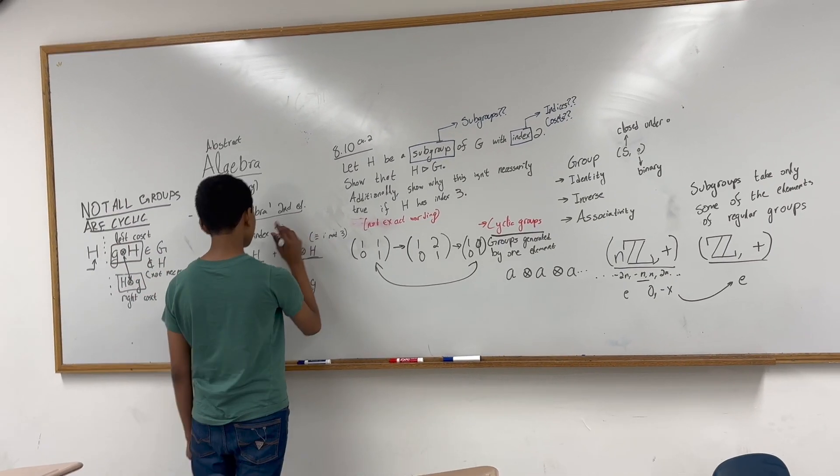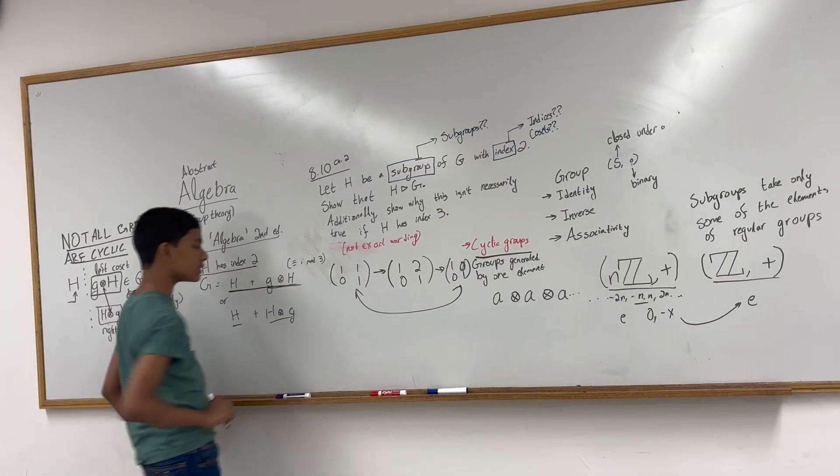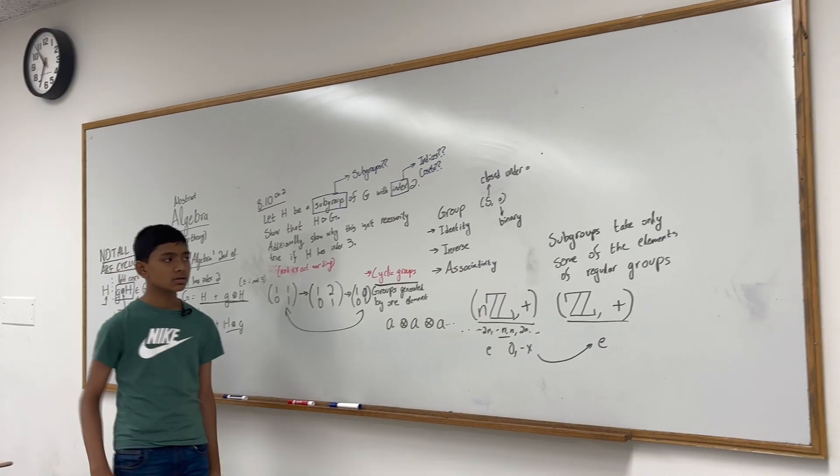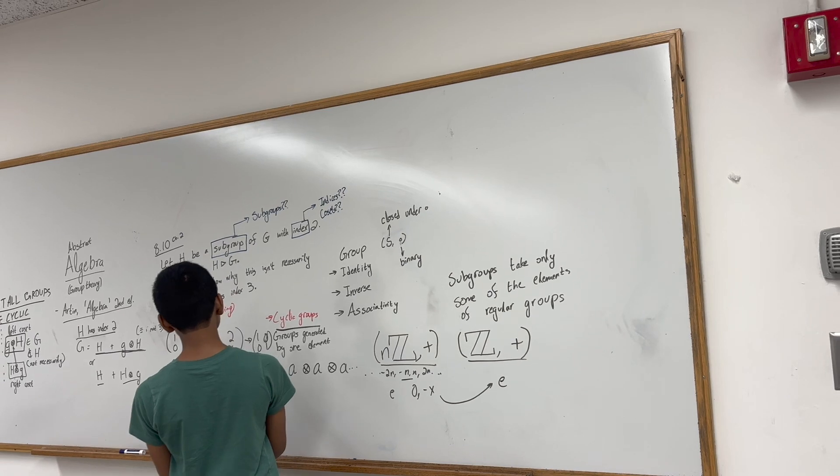It doesn't even have an operation associated with it. H is definitely still a group, but G cross H, or H cross G, doesn't have to be. So if H has index 2, then G can be broken down into the two equal size sets, H and G cross H. So finally, what does normal mean?